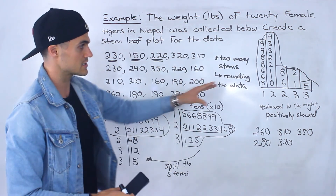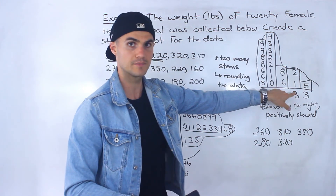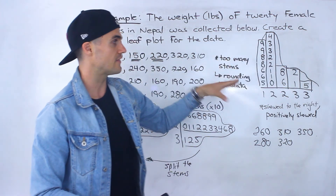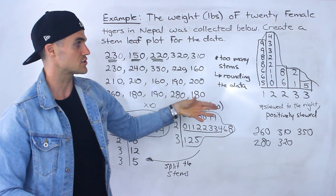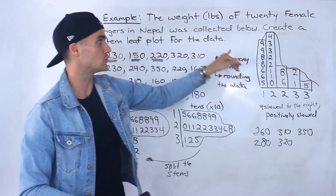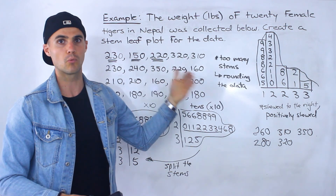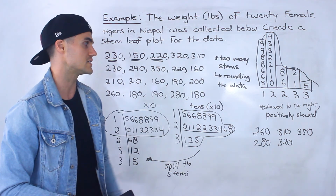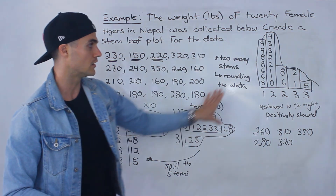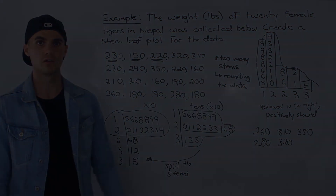These are just potential scenarios, but the point is that you can take a stem-leaf plot or histogram, look at the shape of the data, and start asking yourself why that shape is happening. Then you can look into that scenario in more detail. That's an example of how a stem-leaf plot or histogram can be used in real life.